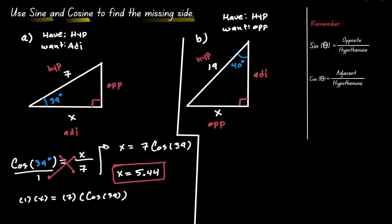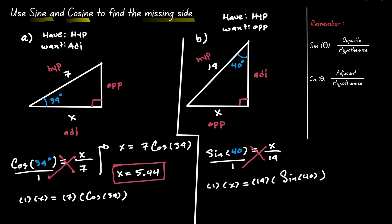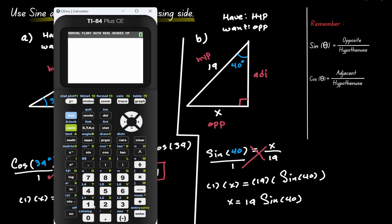So let's set this up. The sine of 40 degrees is equal to the opposite, which is x, over the hypotenuse, which is 19. On the left-hand side, let's set it over 1 so we can see that we need to do cross multiplication. We're going to have 1 times x equals 19 times sine of 40. On the left-hand side, 1 times x is just x. On the right-hand side, let's write it as 19 sine of 40. Now let's use our calculator: press 19, press the sine button, and inside the parentheses place 40. Don't forget to close the parentheses and press enter. So we conclude that x equals 12.21.